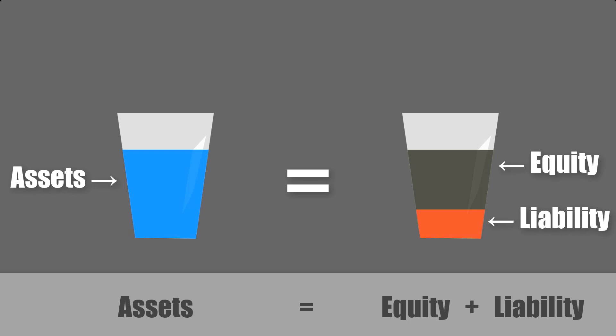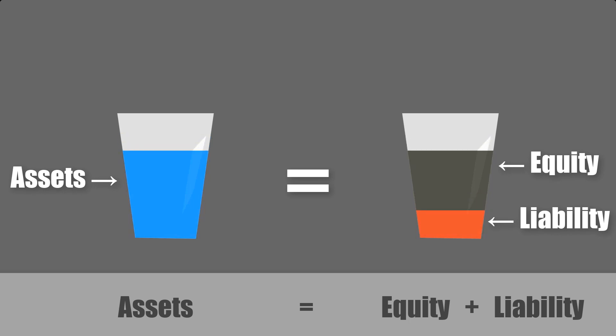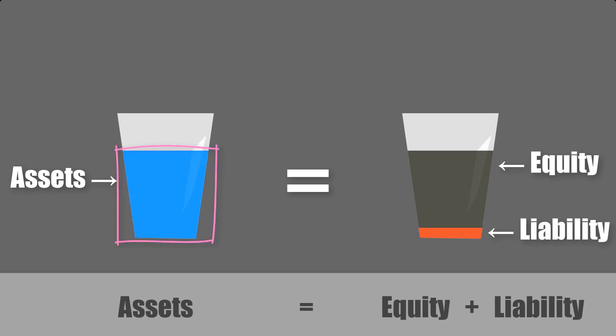In order to make this happen, whenever you add assets to the first glass, you have to add liability, equity, or a mix of the two to the second glass. The same applies when you remove some liquid. To retain the same level in each glass, there is one more possibility: you can add and remove liquid to the same glass so the overall level doesn't change. For example, you can substitute some liability for equity. Similarly, we can substitute one type of assets for another. The important point is that the two glasses must always have the same levels.